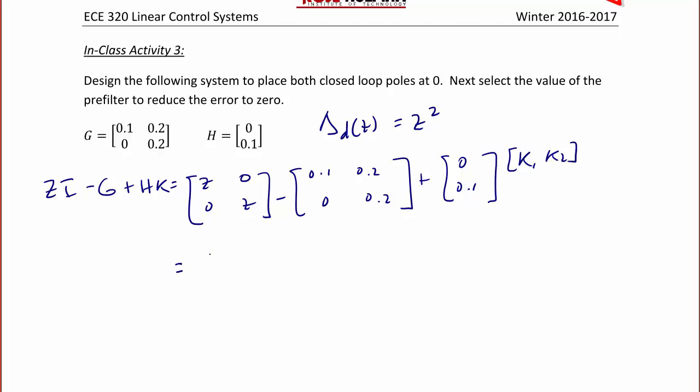When we solve for this summation, we have Z minus 0.1, negative 0.2, 0.1 K1, Z minus 0.2 plus 0.1 K2.